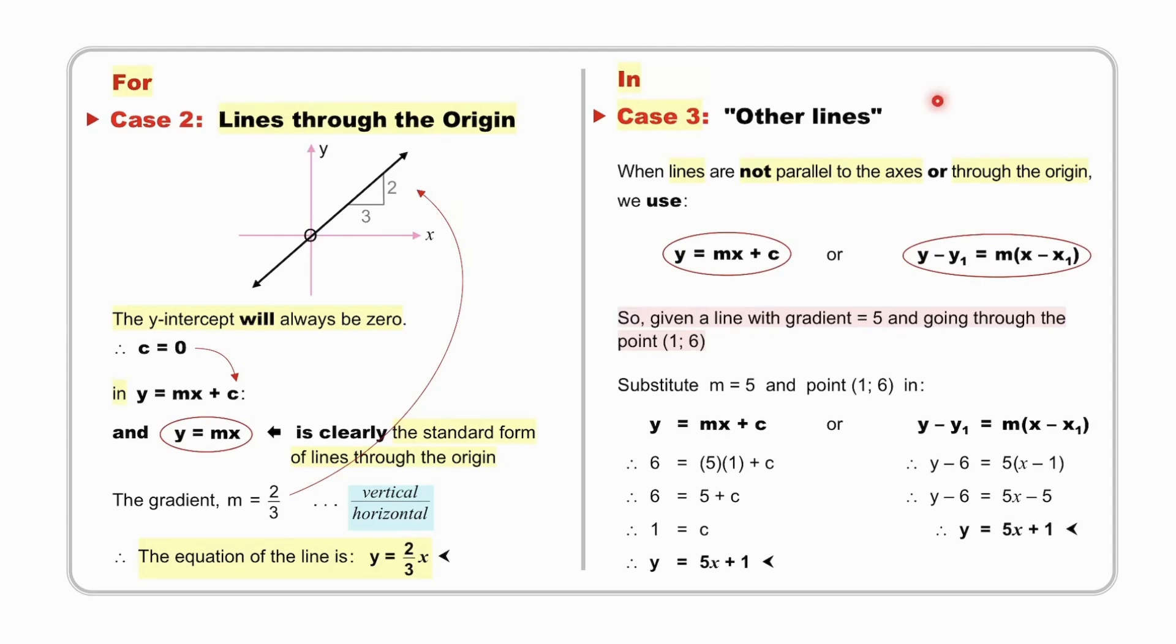In case 3, other lines, when lines are not parallel to the axes, or through the origin, we use y equals mx plus c, or y minus y1 equal to m, x minus x1. So, given a line with gradient 5, and going through the 0, 16, we substitute m equals 5, and 0, 16, in either y equals mx plus c, or y minus y1 equal to m, x minus x1. See these calculations to the end, while we pause this video.